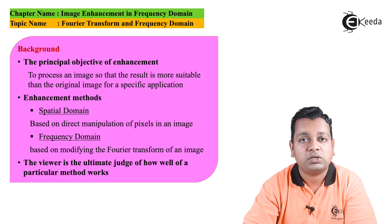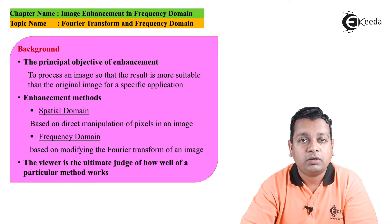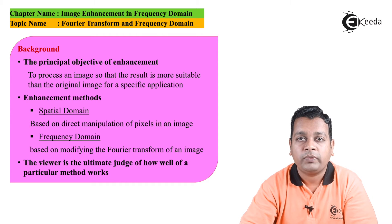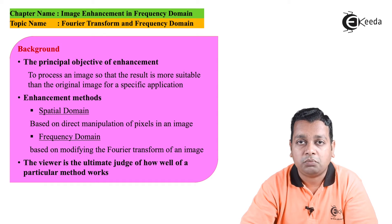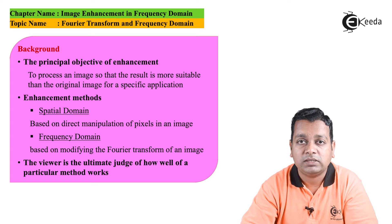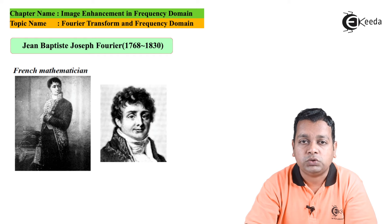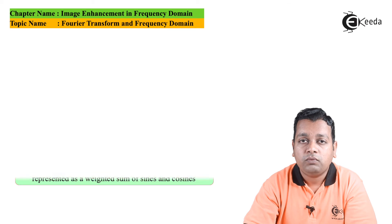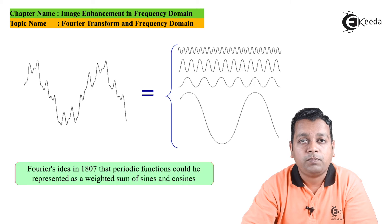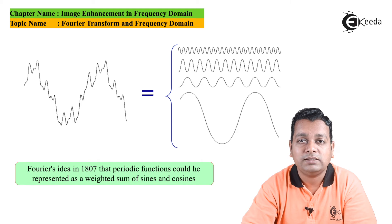Now we begin with the introduction to what the Fourier transform and frequency domain actually are. In chapter 3 on image transforms, we covered the 2D Discrete Fourier Transform, abbreviated as 2D DFT, showing how a two-dimensional signal can be processed using that transform. The Fourier transform is named after Jean-Baptiste Joseph Fourier, a French mathematician who lived from 1768 to 1830. In 1807, Fourier put forward the idea that periodic functions could be represented as a weighted sum of sines and cosines.